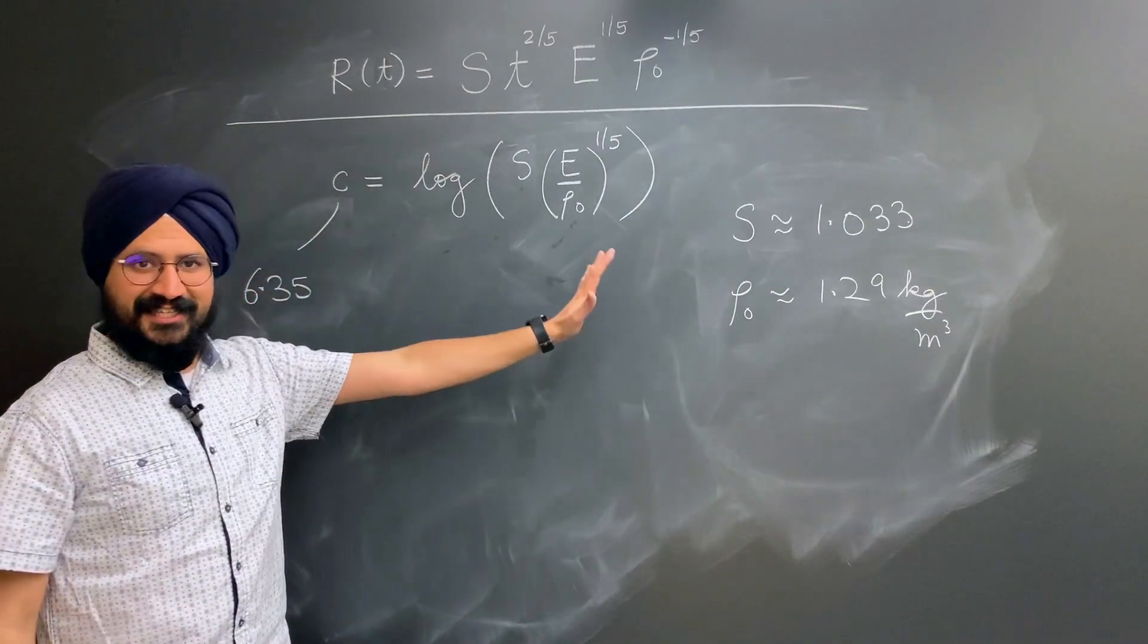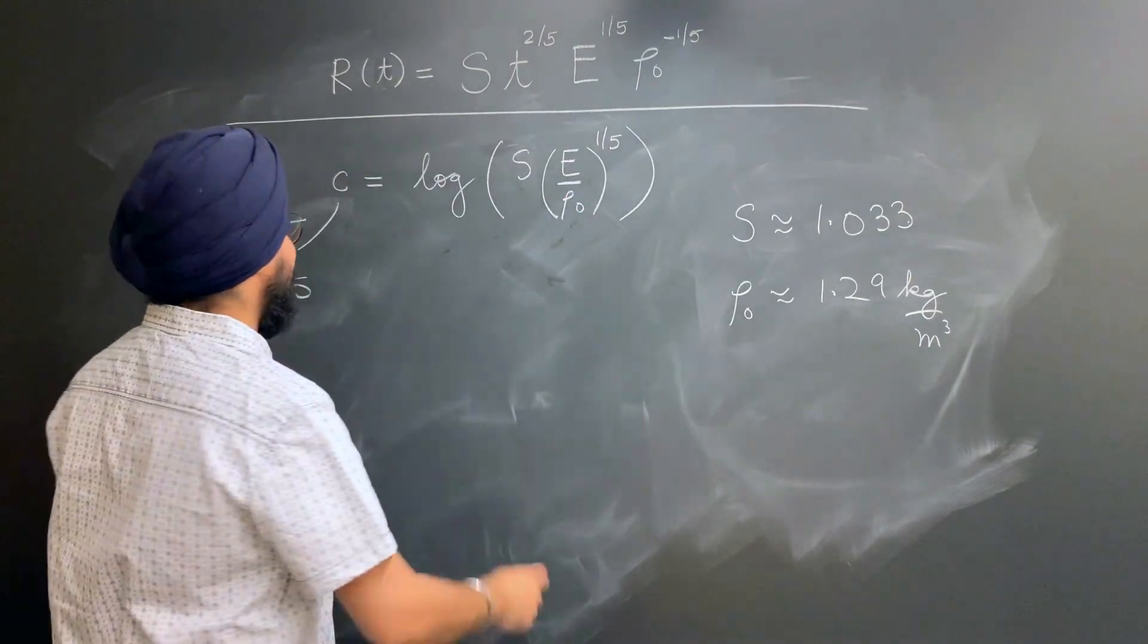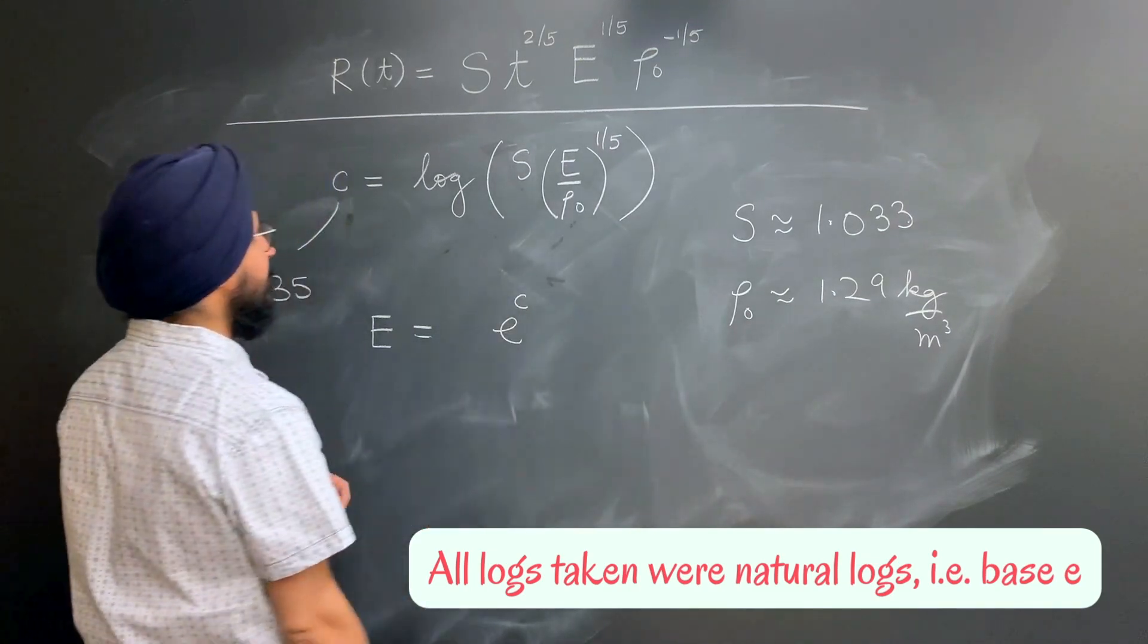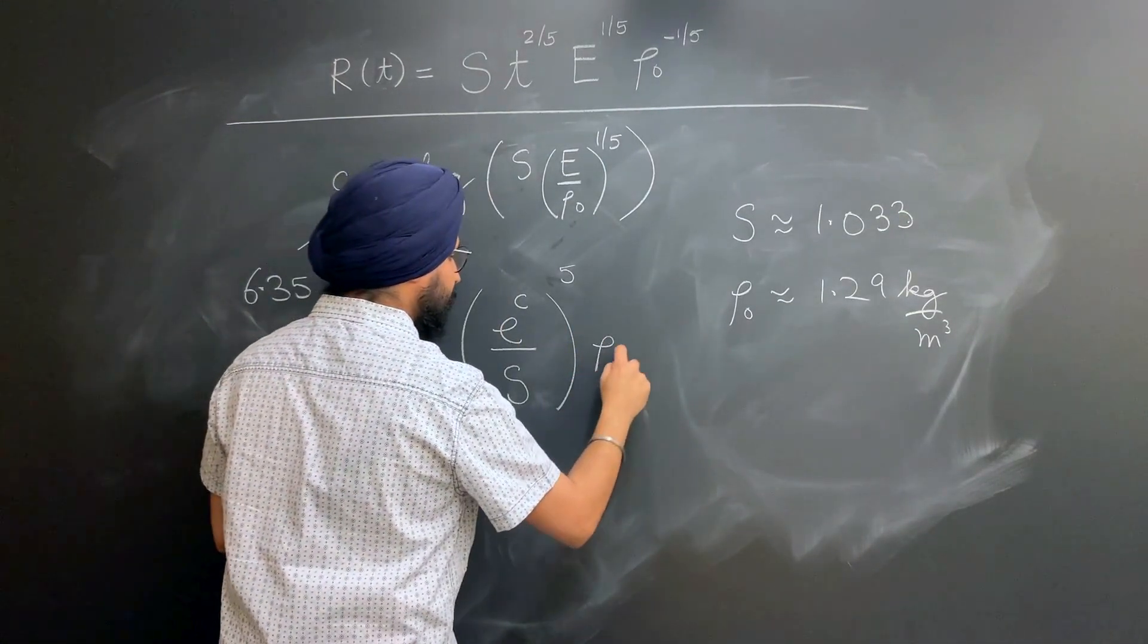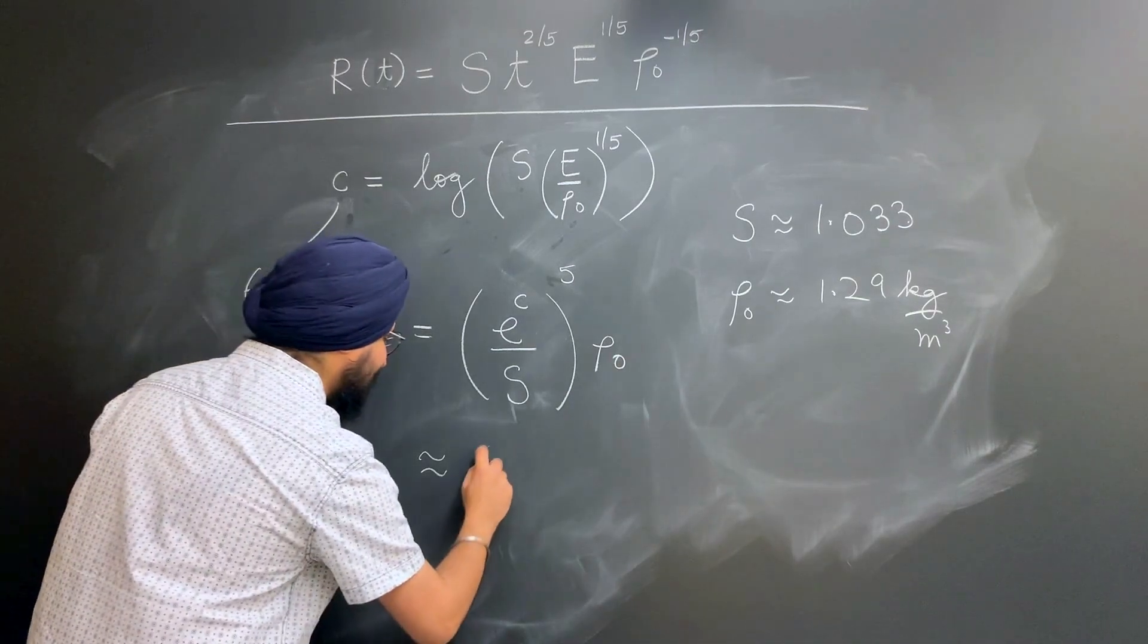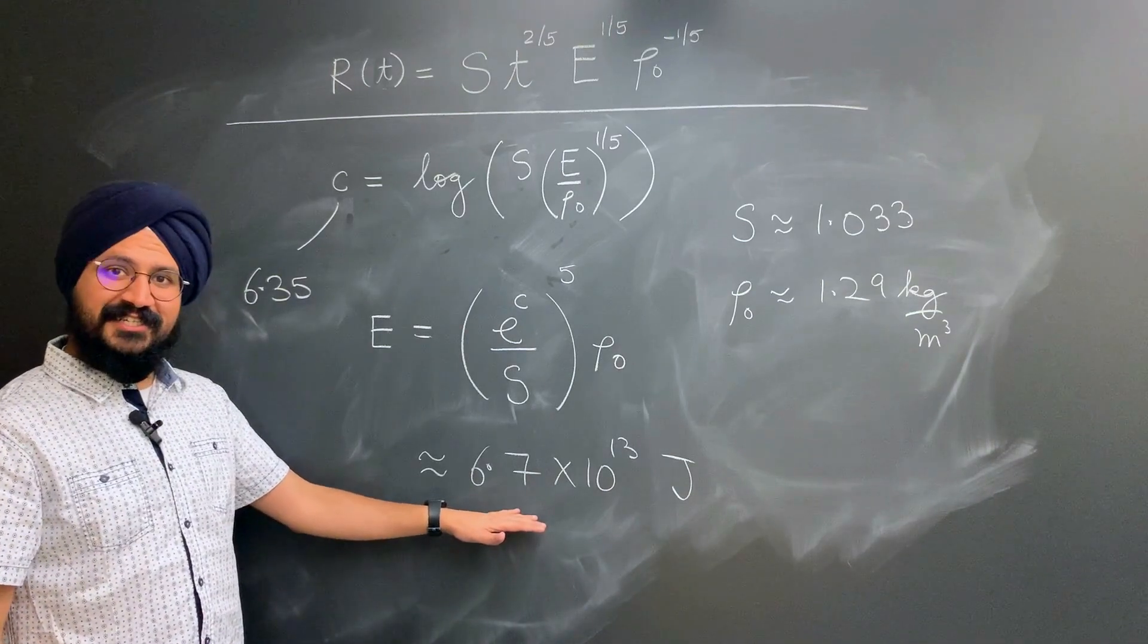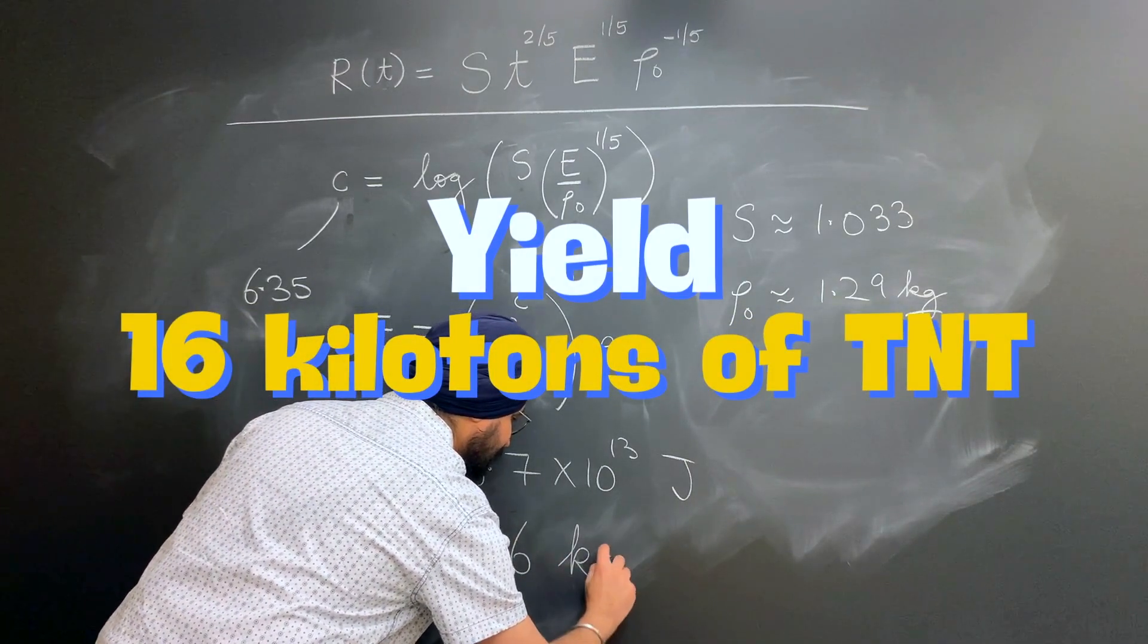Now that we have everything in this expression, we can rearrange it to estimate the energy yield of the explosion. Doing so, we get the energy yield is going to be, I take the exponentiation over here, so I get e to the intercept divided by my constant s to the power 5 times rho naught. Putting all the numbers back, I get the energy yield to be about 6.7 times 10 to the 13 joules of energy released in the explosion. Now that's a lot of energy. Converting it into standard bomb yield unit, it comes out to be about 16 kilotons of TNT.